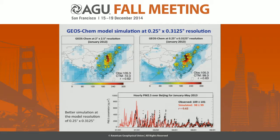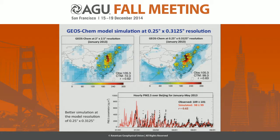We can further increase the model simulation to a quarter degree. Here I show the model simulation for January 2013, over-plotting the measured PM2.5 observations, for the 2x2.5 degree and quarter degree resolutions, and also a time series over Beijing for January to May. Overall we can see that at a higher resolution, the model better captures the observations and their variability. That's because at higher resolution, it captures the site measurement for each site, and also aerosol formation is resolution dependent.